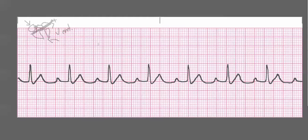Looking at this particular ECG, when we ask what the rate is — one, two, three, four, five, six, seven — the rate is 70. You do have P waves, the QRS is narrow, and a T wave after it. That's the same across the board, so the rhythm is regular and you have P waves.